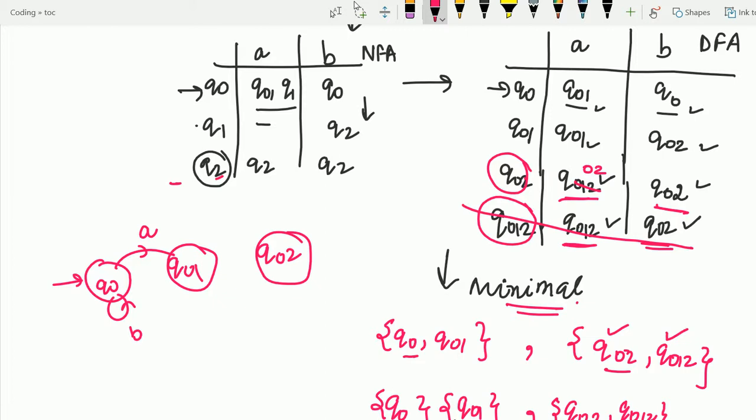Q01 on A. Q01 itself. And Q01 on B. Going to. Q02. And Q02 on A. Q02 itself. And. Q02 on B. Is also. Q02 itself. Q0. And also. The final state. Is Q02. That is Q02.